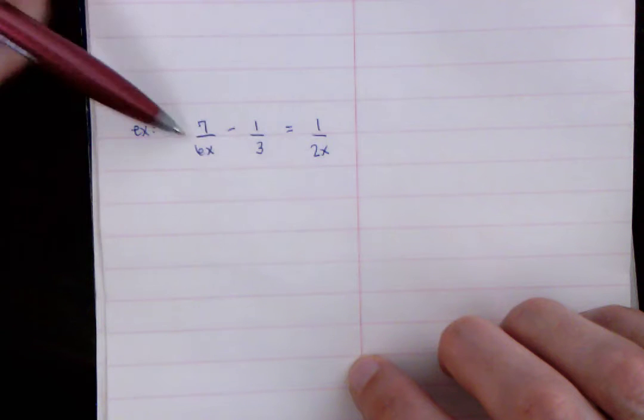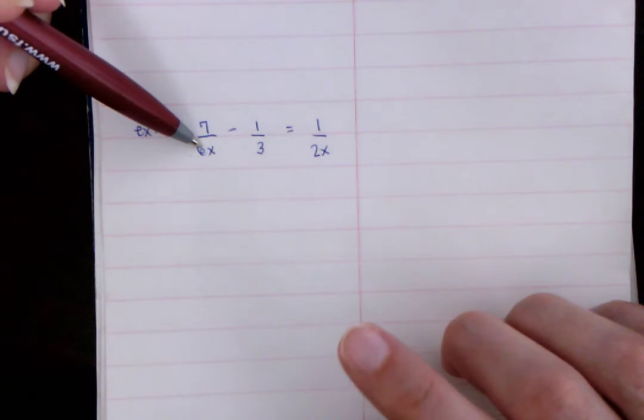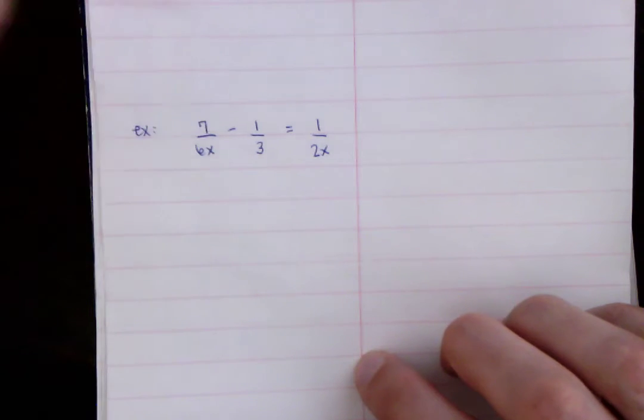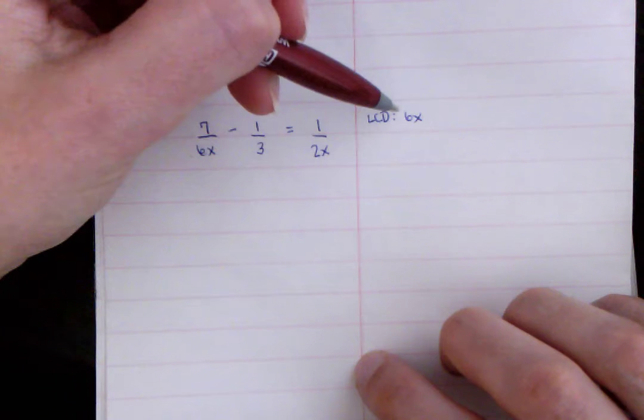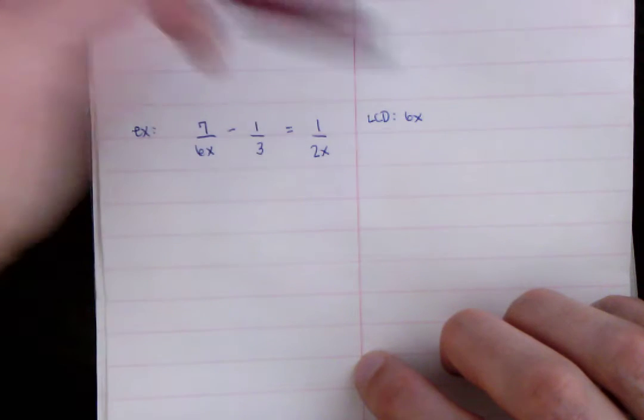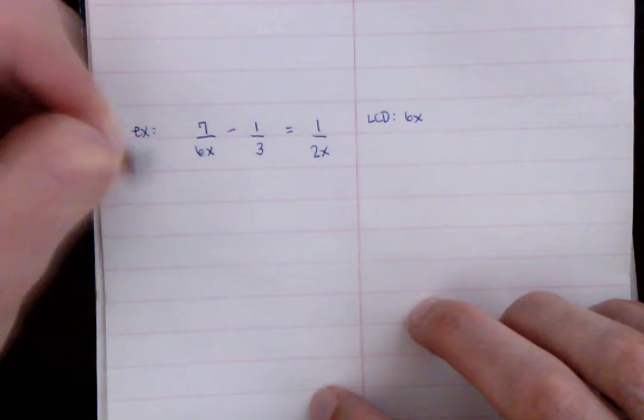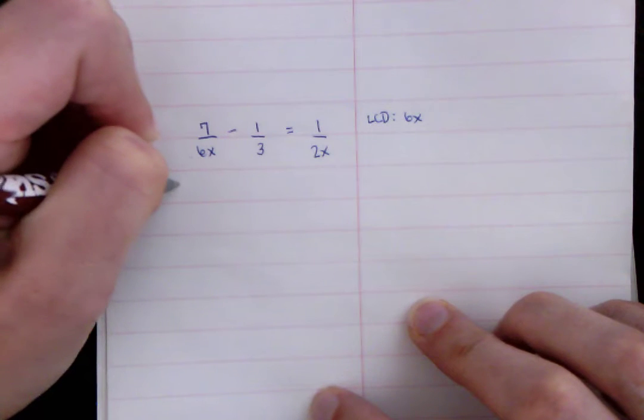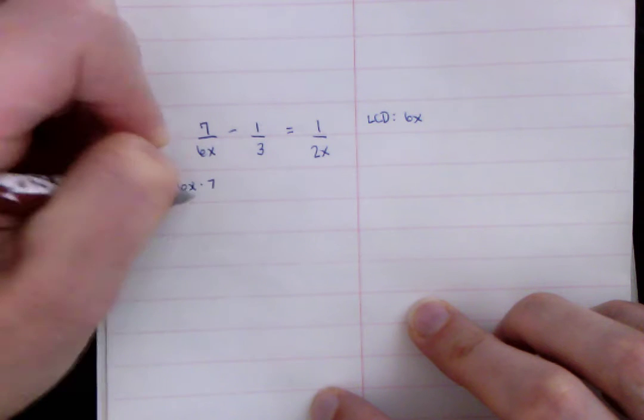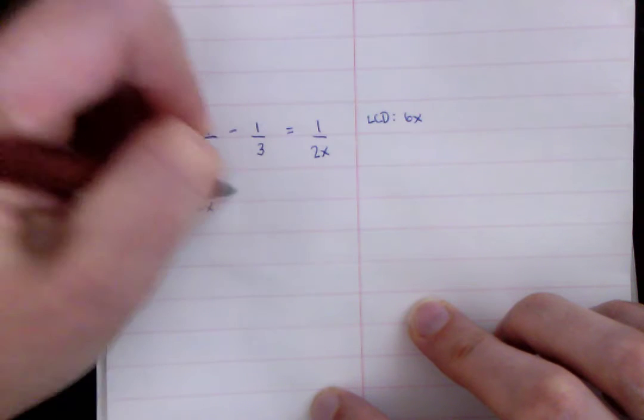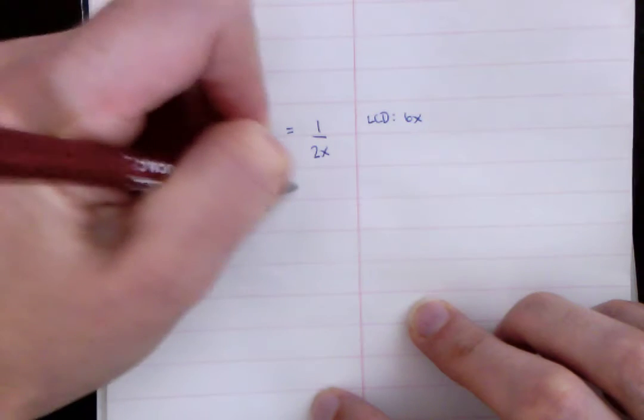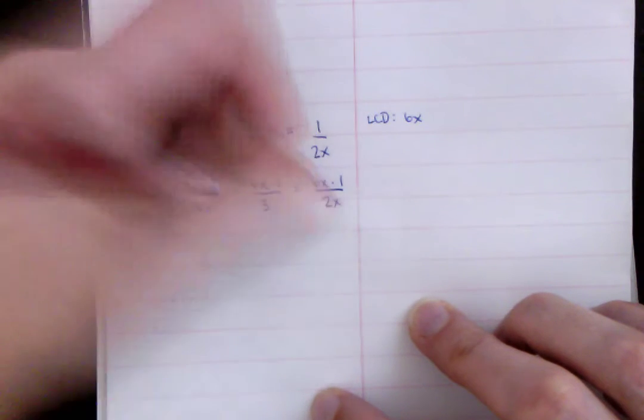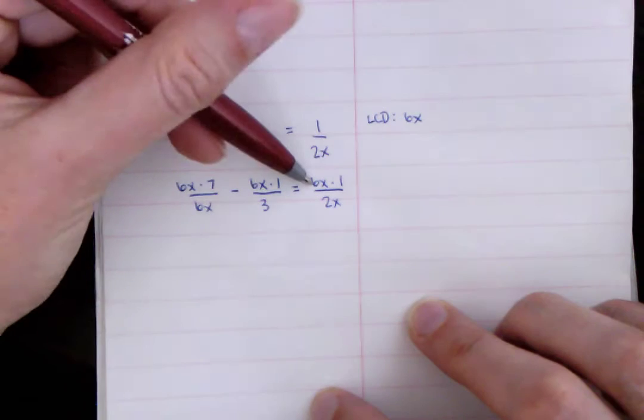So the LCD here, you can see that two, three, and six, they can all go into six. And you can see that they have an X as well. So our LCD has to be 6X. Okay, so that is what I'm going to multiply both sides by, and that means every term, all three of these, get multiplied by that. So if I multiply each of these terms by 6X, so that's going to be 6X times 7 over 6X, minus 6X times 1 over 3, and equal to 6X times 1 over 2X. So I'm multiplying every single one of these by 6X, the tops.